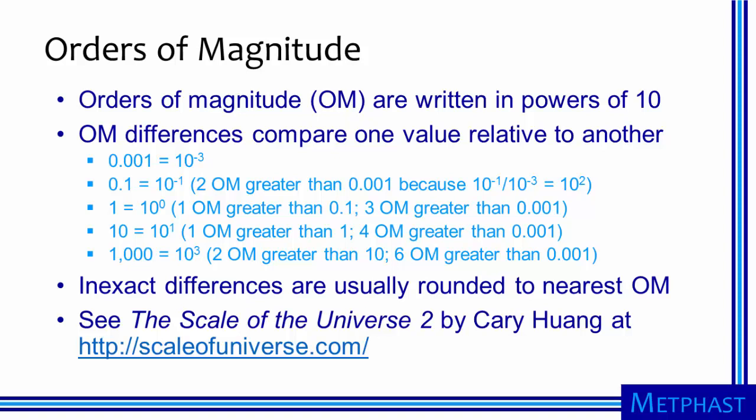Looking at some other specific examples, the number 0.001 can be written as 10 to the minus third power. Similarly, 0.1 can be written as 10 to the minus first power.